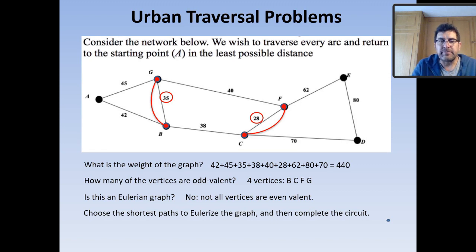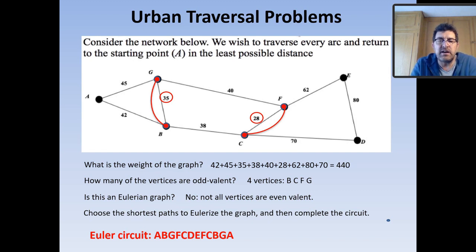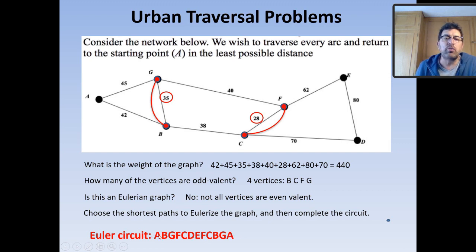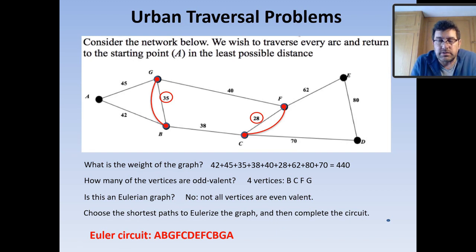One circuit is: A, B, G, F, C, D, E, F, C, B, G, A. You might go in reverse: A, G, B, C, F, E, D, C, F, G, B, A. Note how it grows: with 2 odd nodes there's 1 pairing, with 4 there are 3, with 6 odd nodes there are 15 ways, with 8 there are 105, and with 14 odd nodes there are 135,000 ways. The number of pairings grows exponentially with the number of odd nodes.